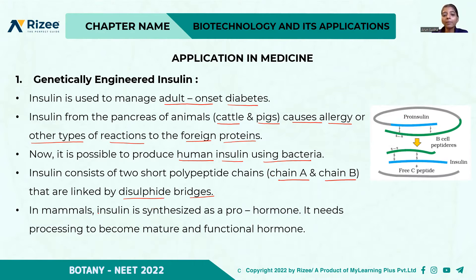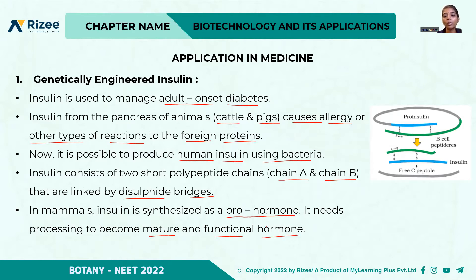In mammals, insulin is synthesized as a pro-hormone. First, it is synthesized as a pro-hormone and it needs processing to become the mature and functional hormone. The pro-hormone has to be converted to the functional hormone.